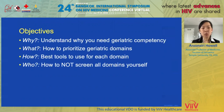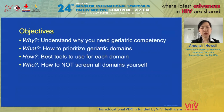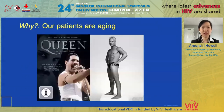First, we'll address why — why do you as an HIV clinician need to understand and have geriatric competencies? Then we'll address what — how do we prioritize which geriatric domains to do in a short clinic visit? Then we'll address how — what are the best tools to use for each geriatric domain? Then we'll talk about who should be doing these domains, and the answer is hopefully not just the physician by themselves. First, we'll talk about why.